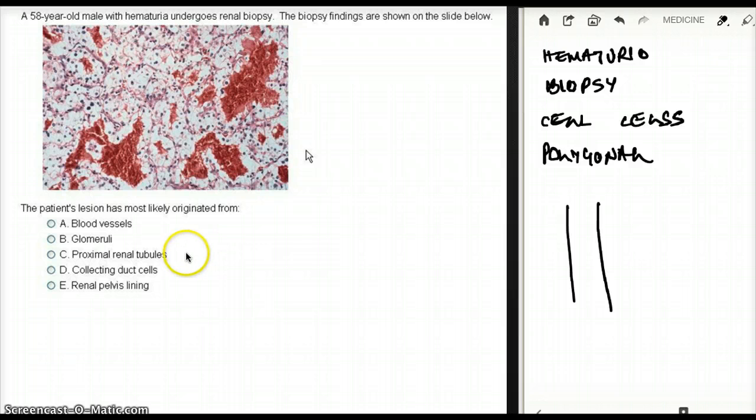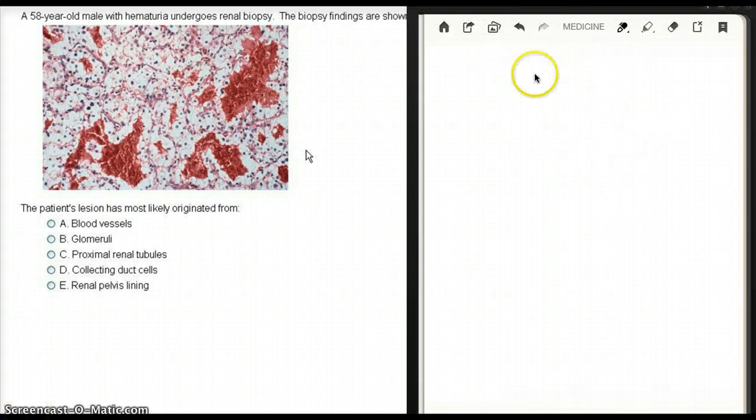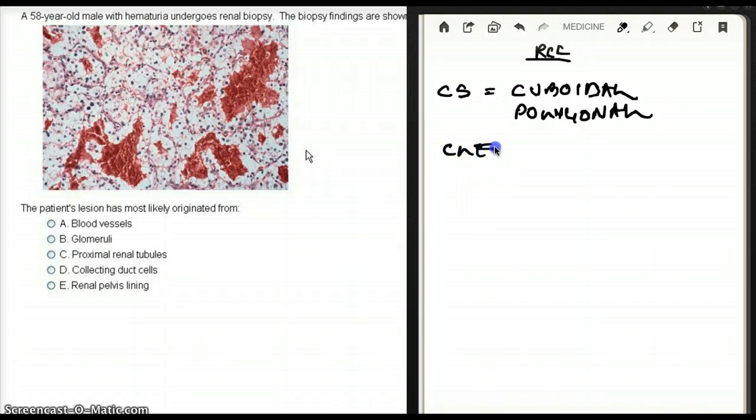Getting to the answer is not that difficult, but let's talk about renal cell carcinoma in general. In renal cell carcinoma, the cell shape is going to be cuboidal or polygonal.